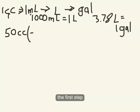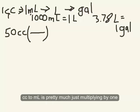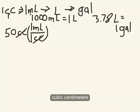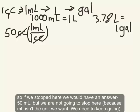The first step, cubic centimeters to milliliters, it's pretty much just multiplying by one. But we're going to write this conversion factor in here, just to show that we are canceling cubic centimeters and ending up with milliliters. So if we stopped here, we would have our answer 50 milliliters. But we're not going to stop here, we're going to keep going.